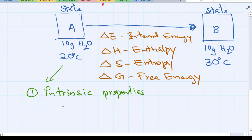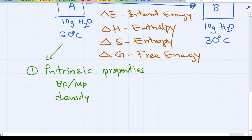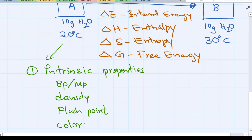Now there are a few other things we want to know. Intrinsic properties. What's the intrinsic properties? Things like boiling point, melting point, density, and also flash point, and also all the chemical properties of it.